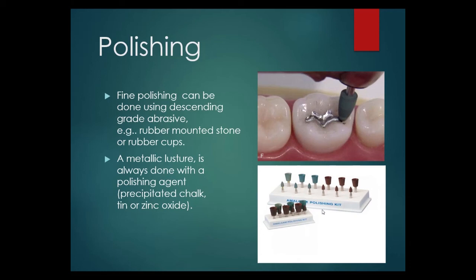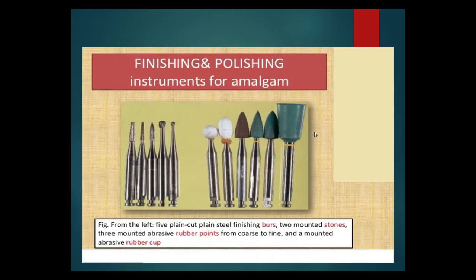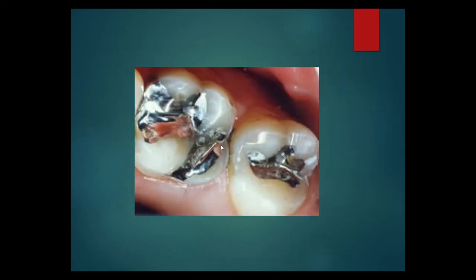Fine polishing can be done using descending grade abrasives such as rubber-mounted stones or rubber cups. A metallic luster is achieved with a polishing agent such as precipitated chalk, tin oxide, or zinc oxide. The final polishing should produce a lustrous surface. Different types of burs used in finishing and polishing include carbide burs and rubber cups and stones.